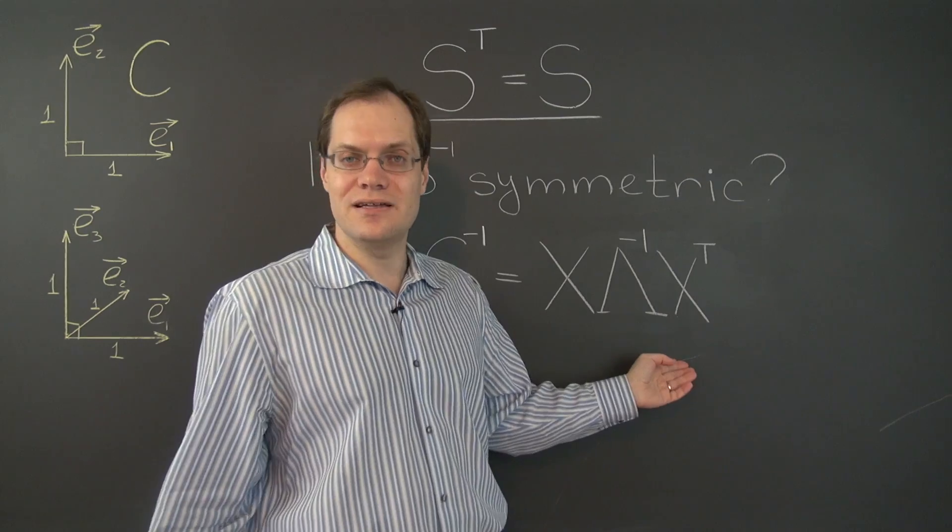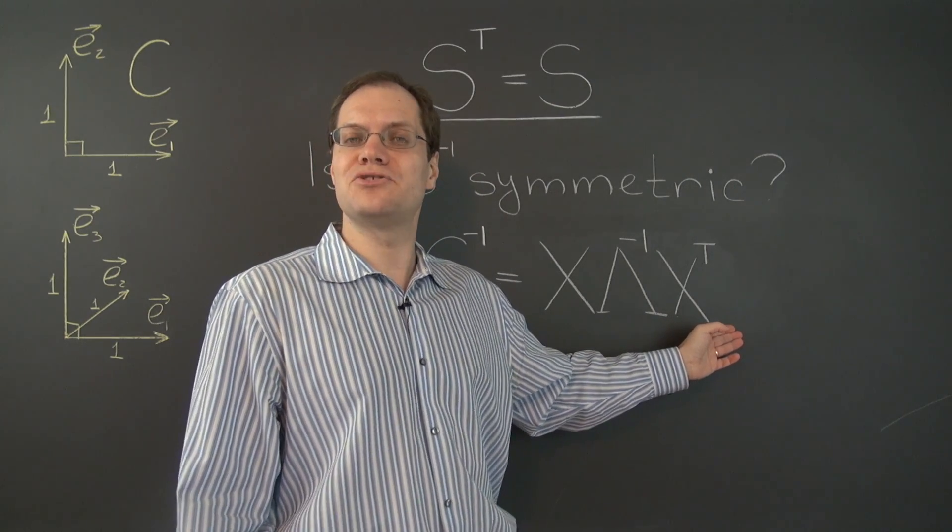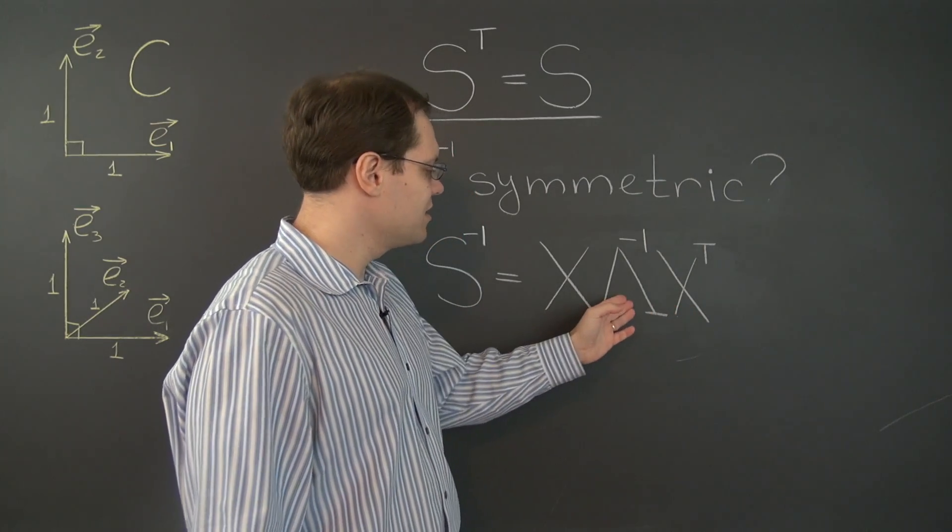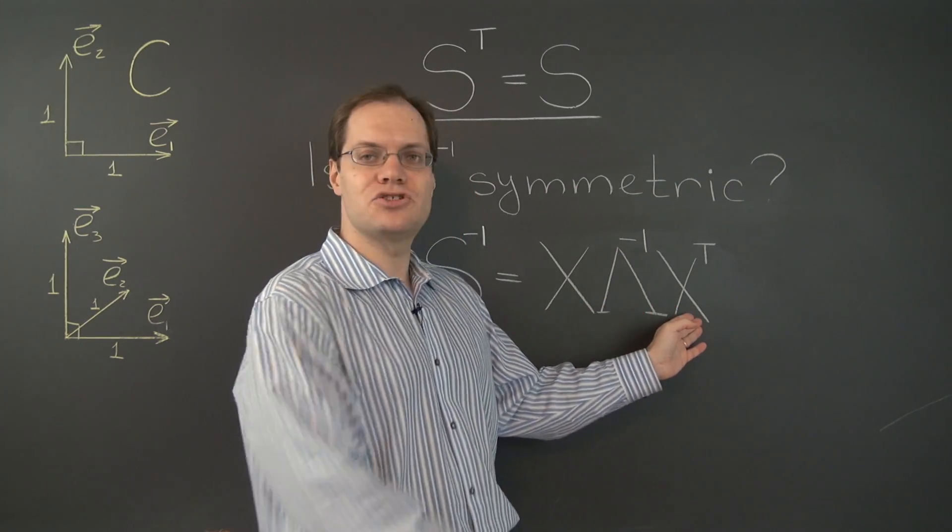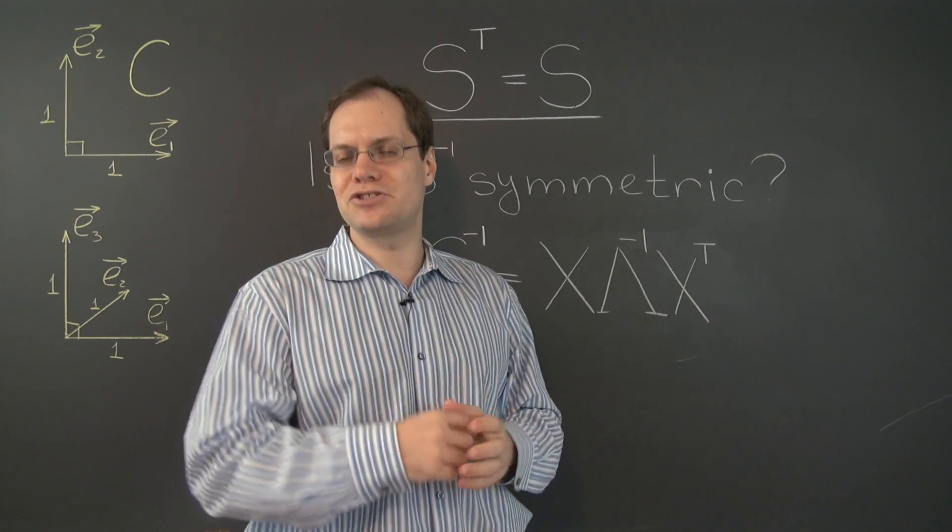And we're done. This is a signature for a symmetric matrix. A matrix times the diagonal matrix times the transpose of the first matrix. Any matrix that has this form is symmetric.